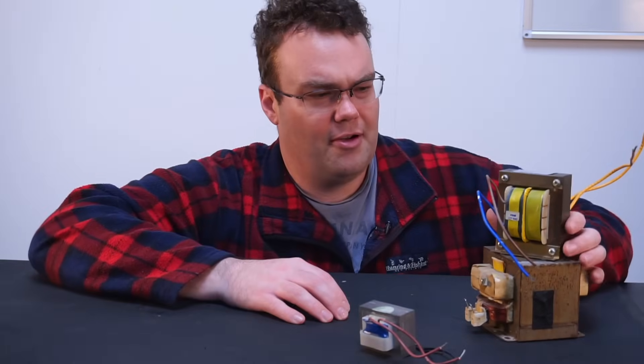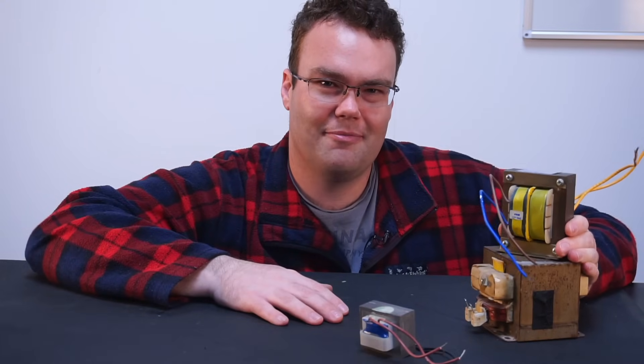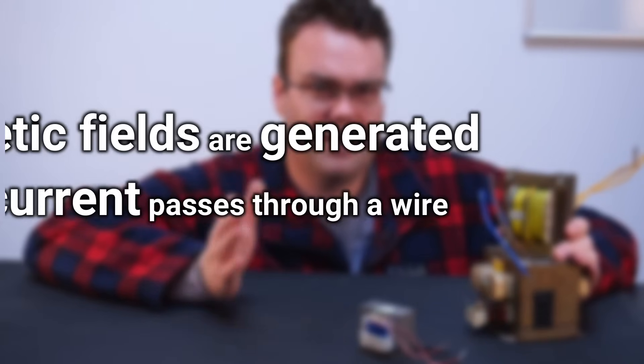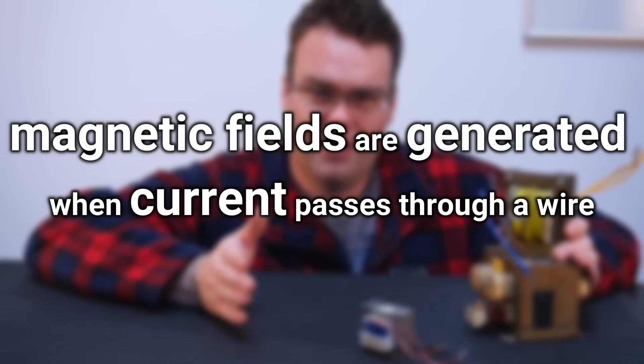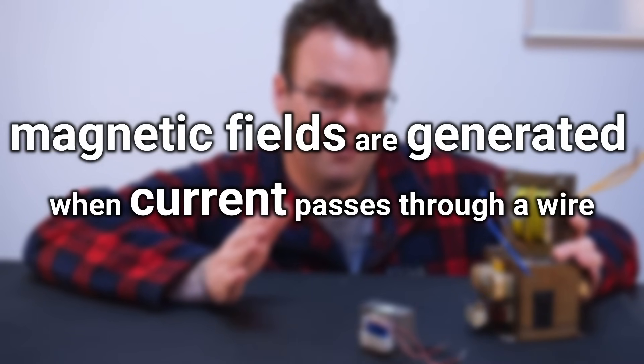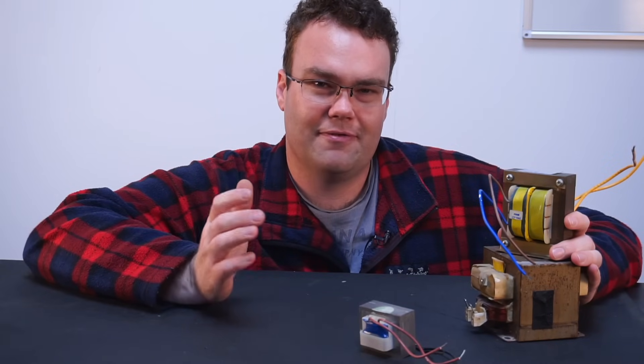So how do we go about choosing the right transformer to transform into an electromagnet? Well, magnetic fields are generated when current passes through a wire. Now the keyword there is current. Current is the thing that is going to dictate how strong the magnetic field is.